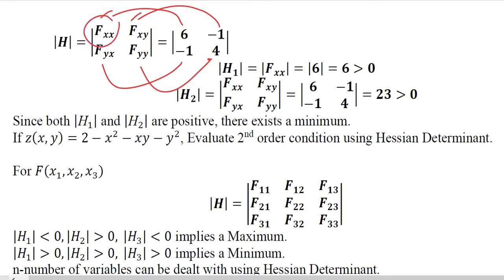|H_1| would be the first element. Then there will be inclusion of the other rows and columns. |H_1| is 6, which is a positive value, and |H_2| is the extension to the whole determinant. Putting these values we get the answer which is 23, which is a positive value. So both |H_1| and |H_2| are positive, so there is a minimum at this point.